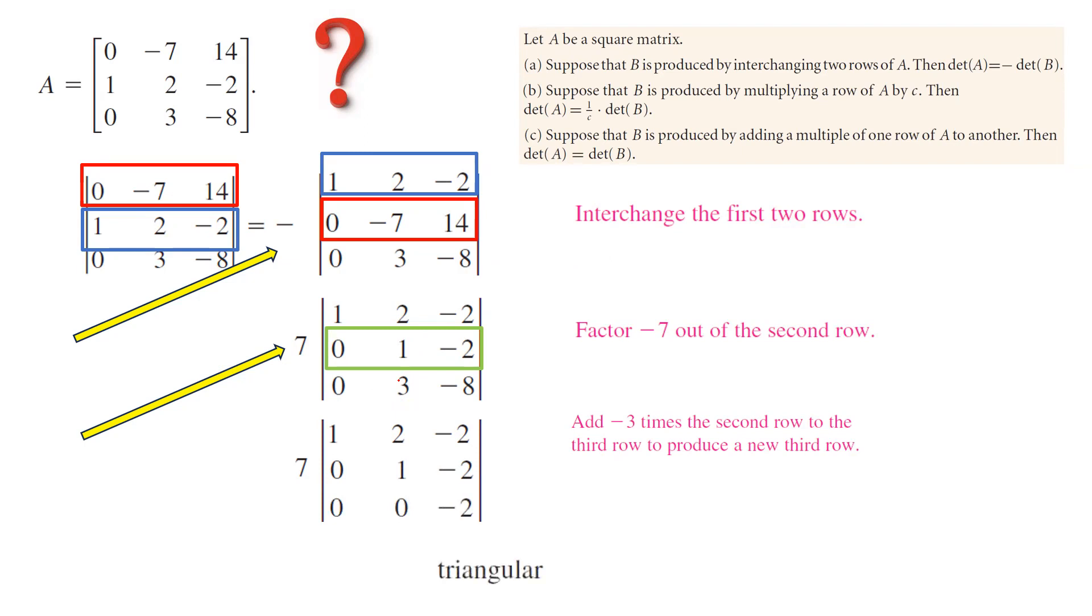Pay attention. You have a triangular matrix. The determinant of the original matrix is equal to 7 times the multiple of elements on the main diagonal. So you have 7 times 1 times 1 times negative 2, which is negative 14.